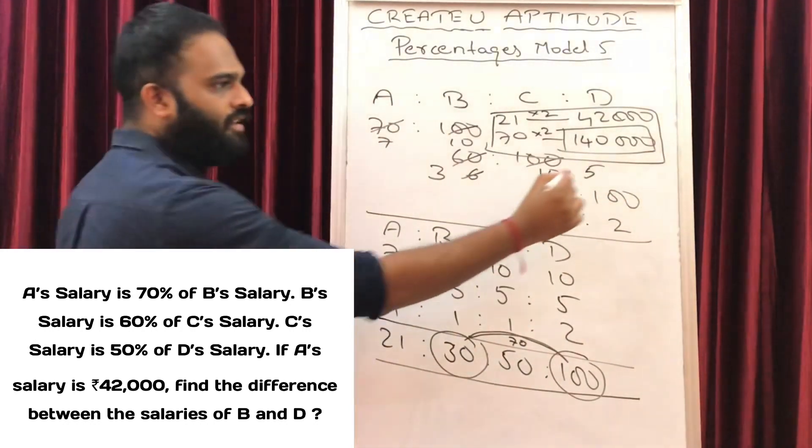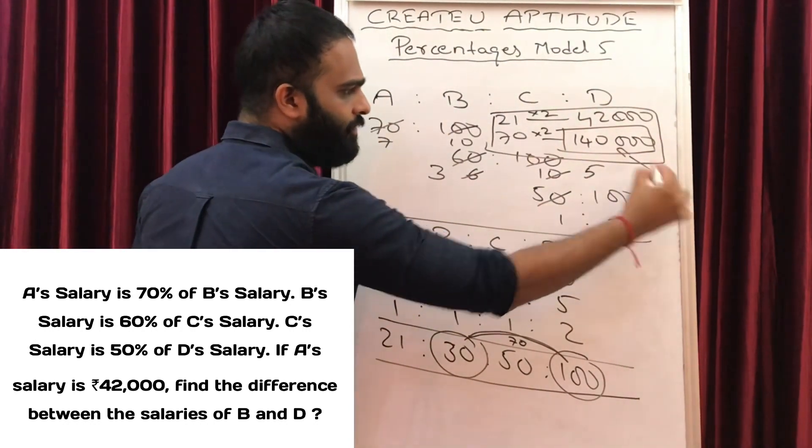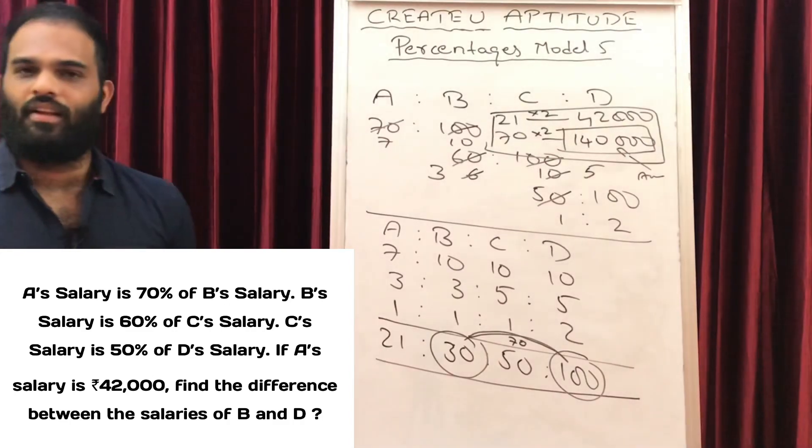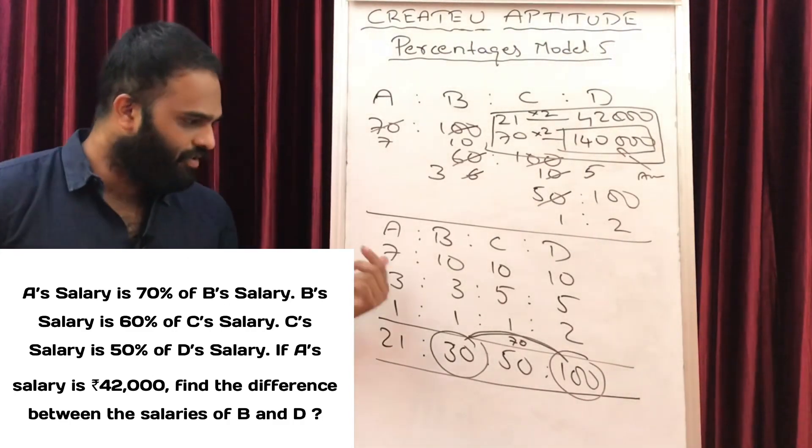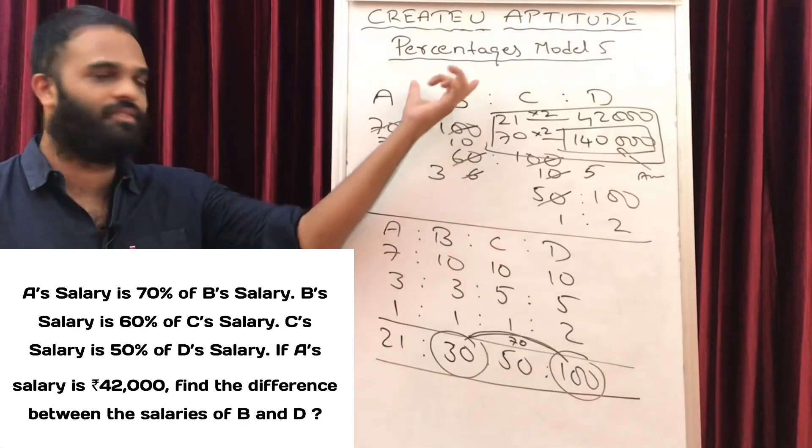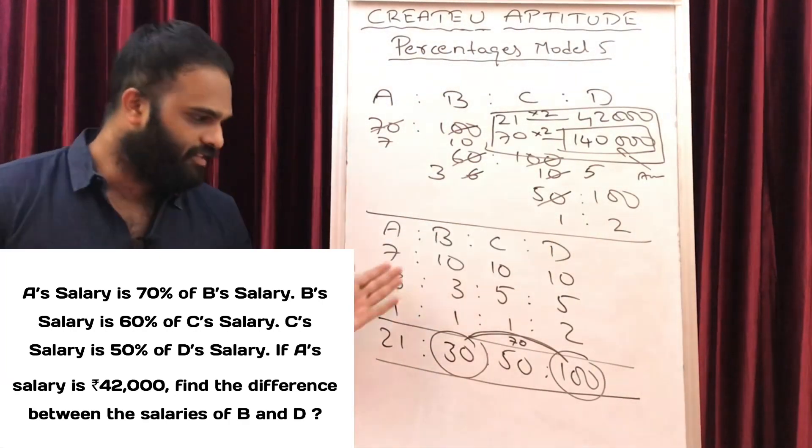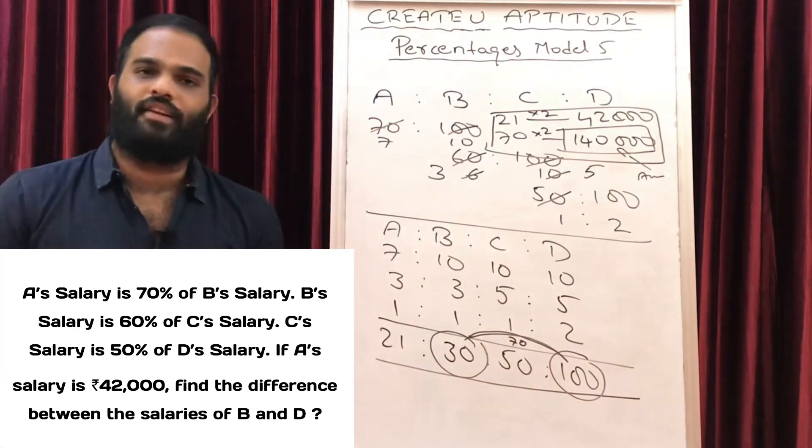So our answer is 140,000. This is our answer. Very very simple. If you have questions A is to B is to C is to D, you will first write 100% for the comparison one. And if you do this, you will answer the ratios later.